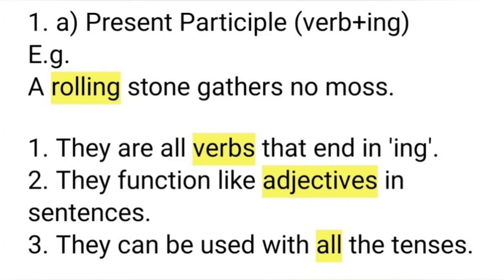Such verbs in their -ing form functioning like adjectives in sentences are called present participles. See the features of present participles: they are all verbs that end in -ing form, they function like adjectives in sentences, and they can be used with all the tenses.